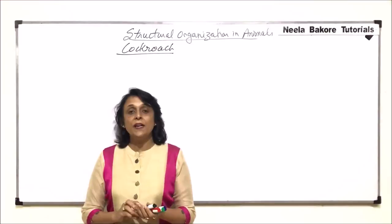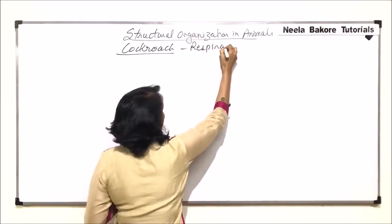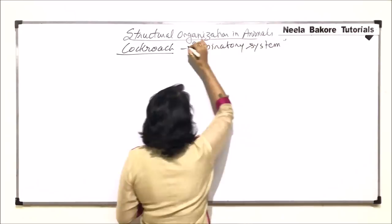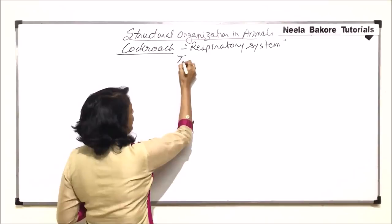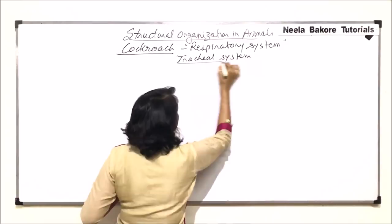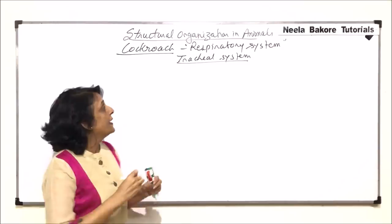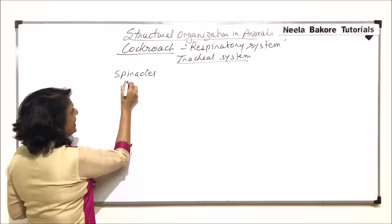In this video, we will be talking about the respiratory system in cockroach. The respiratory system is made up of chitinous tubes and is known as the tracheal system. There are chitinous tubes with multiple branches, and their openings are known as spiracles.